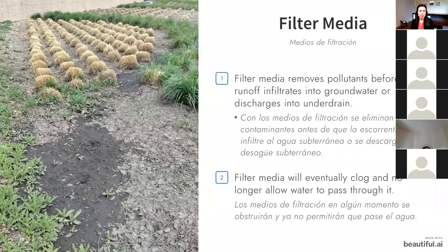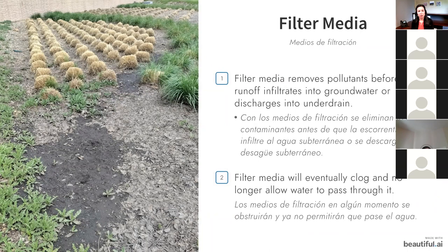Filter media removes pollutants before runoff infiltrates into groundwater or goes into the underdrain. The filter media will eventually clog because its whole purpose is to collect pollutants — so it won't let water pass through eventually if not maintained properly. You can see pollutants starting to accumulate, and just so you know, that means it's working.